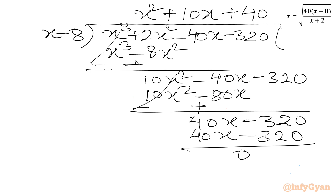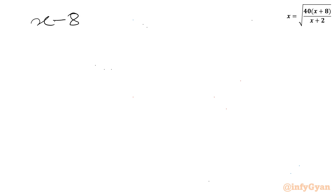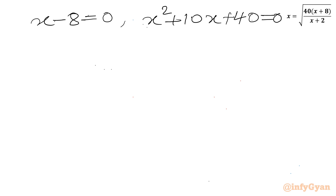So our factorization is (x minus 8)(x squared plus 10x plus 40) equals 0. We can conclude from here: either x minus 8 equals 0, or the quadratic x squared plus 10x plus 40 equals 0. From the first equation, x equals 8.